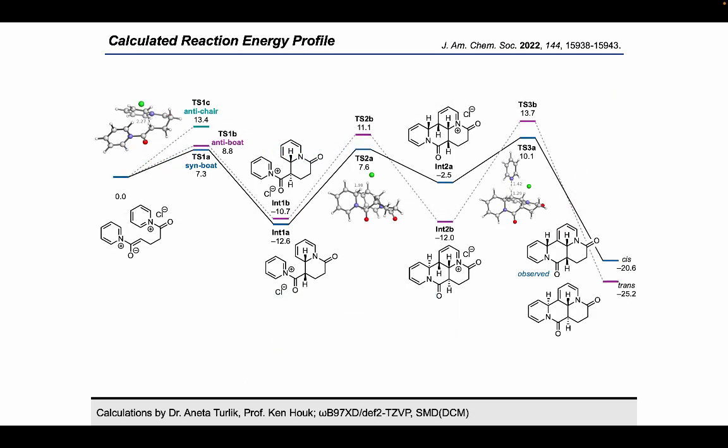We also investigated the reaction energy profile computationally in collaboration with Ken Hauck's group at UCLA. Our starting point was the acylpyridinium enolate, which went through a syn-boat transition state to give the cis-monocyclized compound as a lower energy intermediate than the trans-monocyclized compound. The transition state energy difference between the trans- and cis-monocyclized compound was only 1.5 kcal a mole, and by NMR we did see the formation of some of the trans-monocyclized compound. Next, the cis-monocyclized compound underwent the second cyclization to give the protonated all-cis-tetracycle, which was nearly 10 kcal a mole higher in energy than the trans-tetracycle.